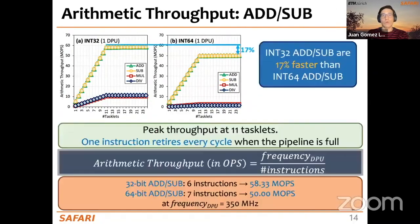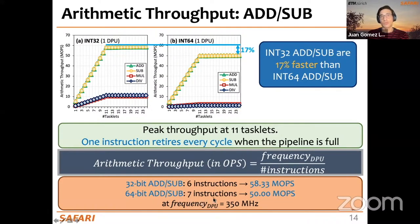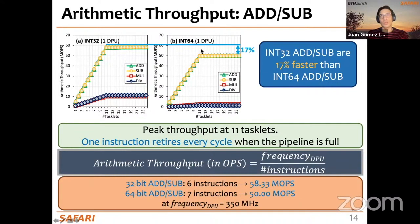Based on that, we estimate the arithmetic throughput as 58.33 mega-operations per second for 32-bit addition and subtraction, and 50 mega-operations per second for 64-bit addition and subtraction because it uses seven instructions. These estimates match very closely what we measure on the real DPU, as you can see in the upper plots.